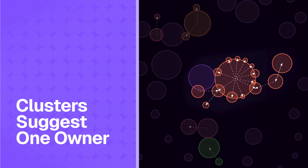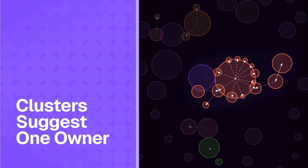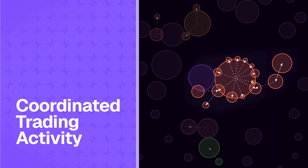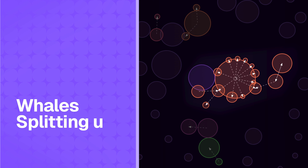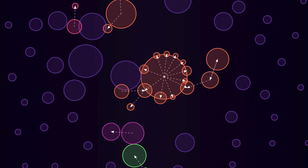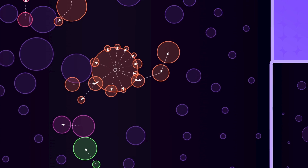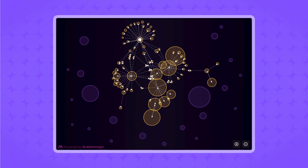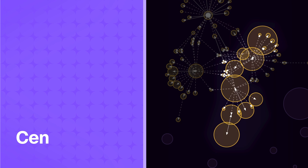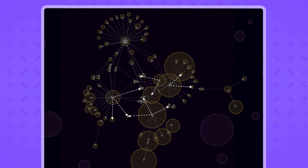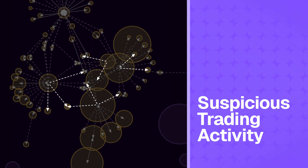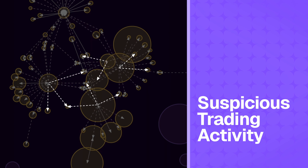Clusters of connected bubbles can suggest wallets controlled by the same entity, coordinated trading activity, or whales splitting their funds. Bubble maps help you identify potentially suspicious tokenomics, like highly interconnected large bubbles, which could signal multi-wallet manipulation or centralization. Dense clusters with short lines might indicate rapid trading or attempts to obscure fund flow.